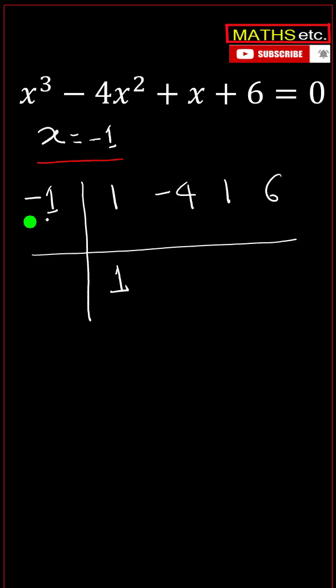Multiply it by minus 1, we get minus 1. Put it here. Add it up, minus 5. Multiply minus 5 by minus 1, we get 5. 5 plus 1 equals 6. Multiply 6 by minus 1, we get minus 6. This equals 0. This is the remainder.